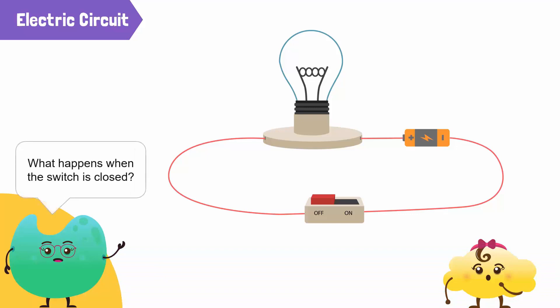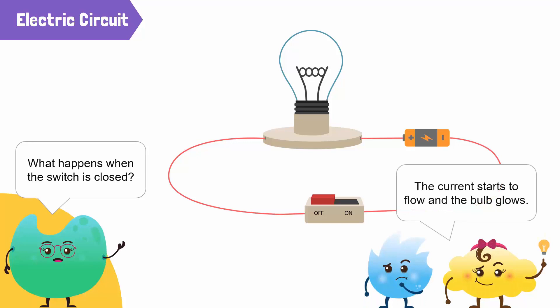What happens when the switch is closed? The current starts to flow and the bulb glows. That's right!